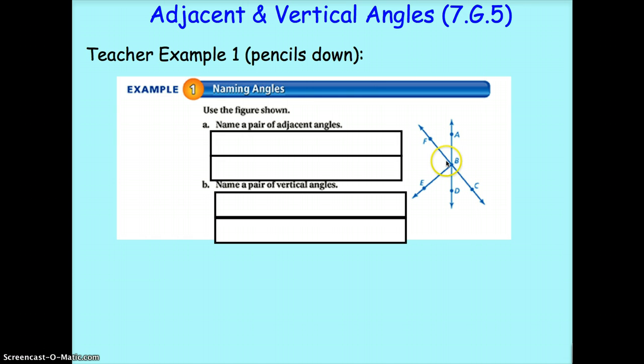So as we can see, all of these are going to have the vertex of B, meaning that's kind of that inner corner of that angle. And then finding some adjacent angles. Some of those adjacent angles, we have A, B, F and F, B, E are adjacent, as well as F, B, E, E, B, D, or E, B, D and D, B, C. And finally, D, B, C, and C, B, A would all be adjacent angles.